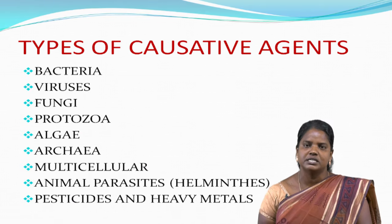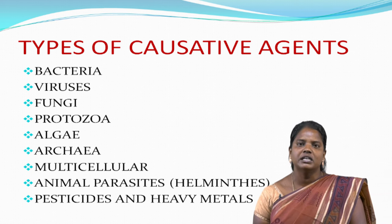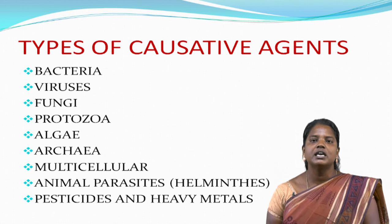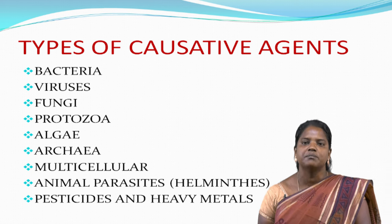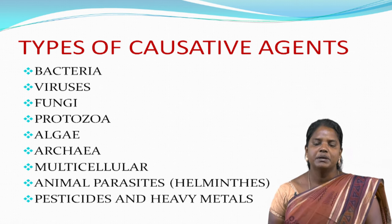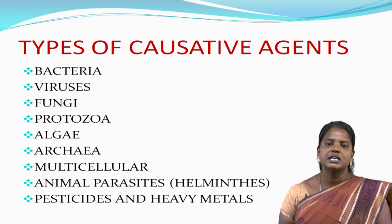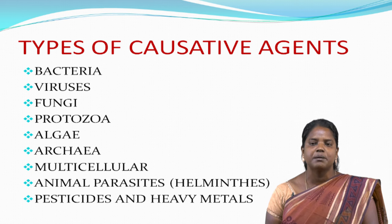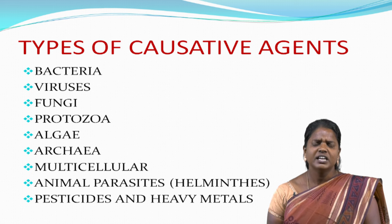Types of causative agents of foodborne diseases include: bacteria, viruses, fungi, protozoans, nematodes, algae, archaea, multicellular or unicellular microorganisms, and animal parasites — for example, helminths. Also included are pesticides or heavy metals; examples of heavy metals are lead and silver nitrate, and pesticide examples include chlorpyrifos or insecticides.